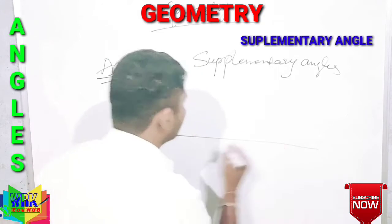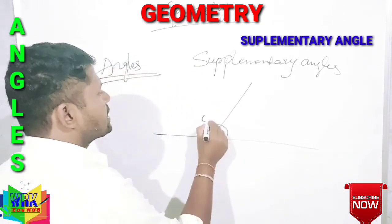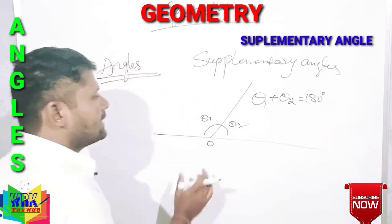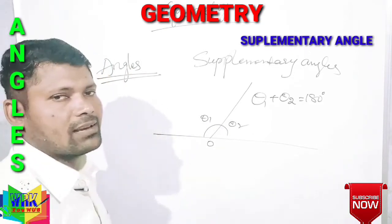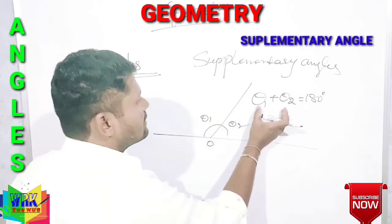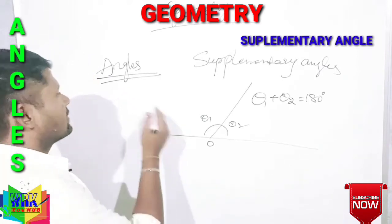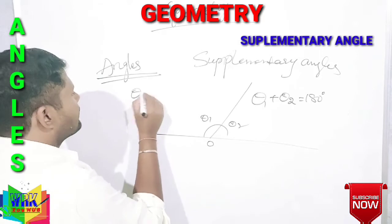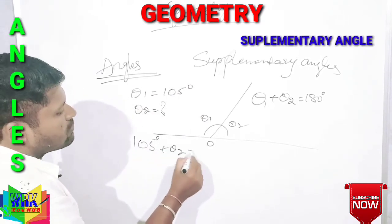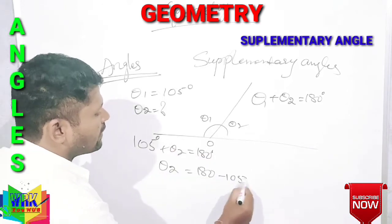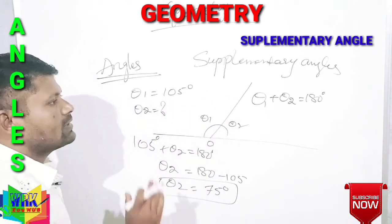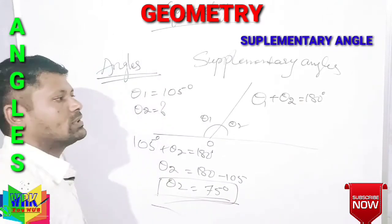Supplementary angles: if the sum of two angles equals 180 degrees, then they are said to be supplementary angles. For example, if theta 1 equals 105 degrees, then 105 plus theta 2 equals 180, so theta 2 equals 75 degrees. Their sum is 180 degrees.